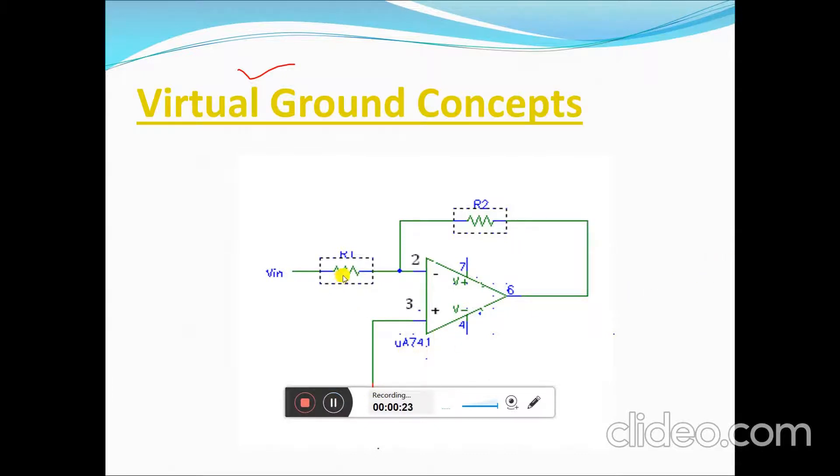As you have seen here, this is the virtual ground concept, how the op-amp is actually virtually grounded. Pin number three is connected to the ground, pin number two is connected to the input voltage with the input resistance.